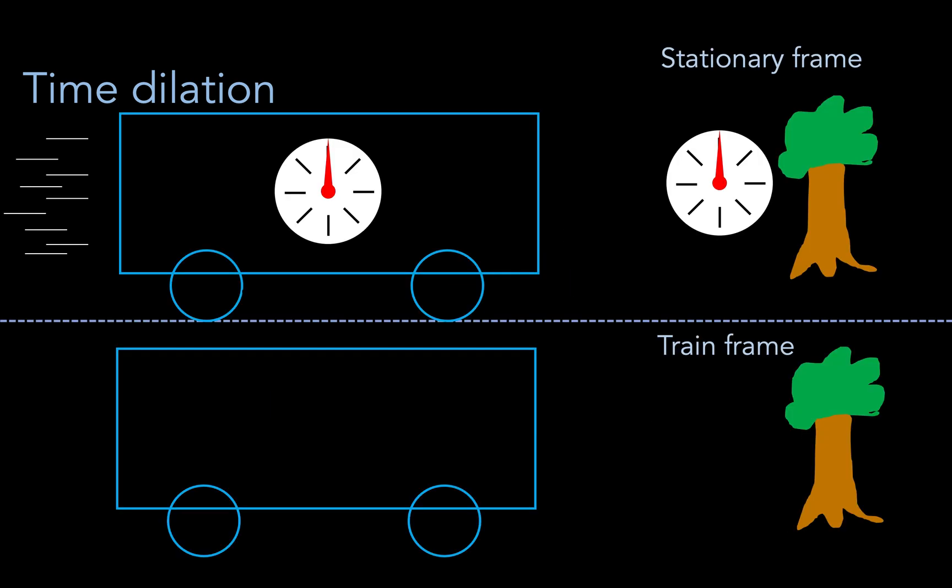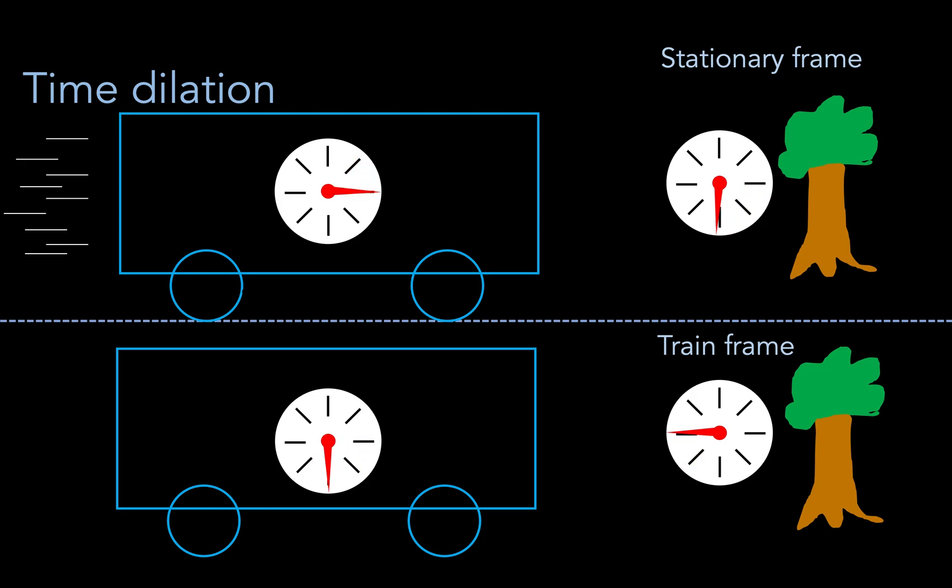We know that to an observer on the ground, a clock on a moving train ticks more slowly than a clock on the ground. However, it also works the opposite way around. To an observer on the train, a clock on the ground ticks more slowly than a clock on the train. So time dilation is symmetric.